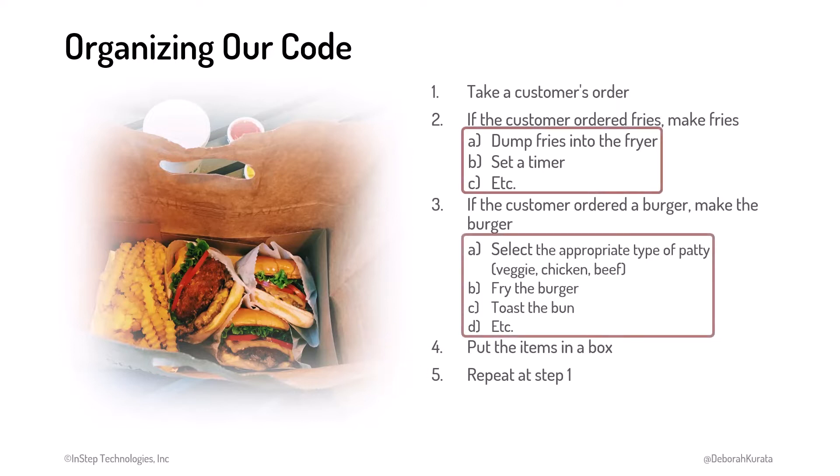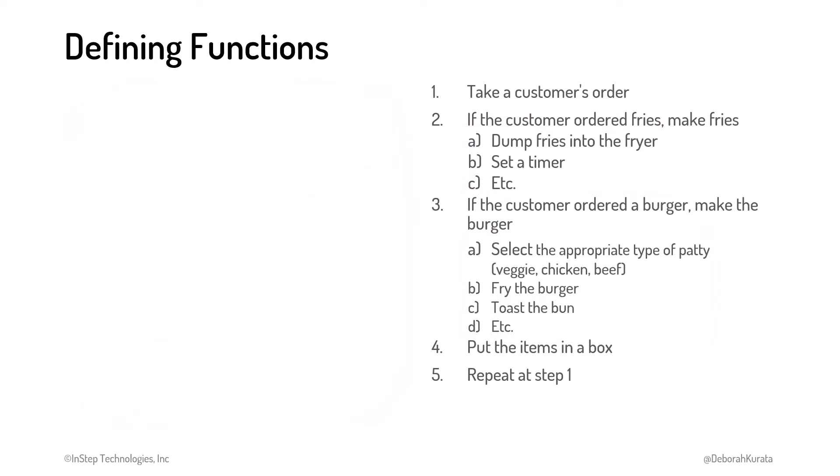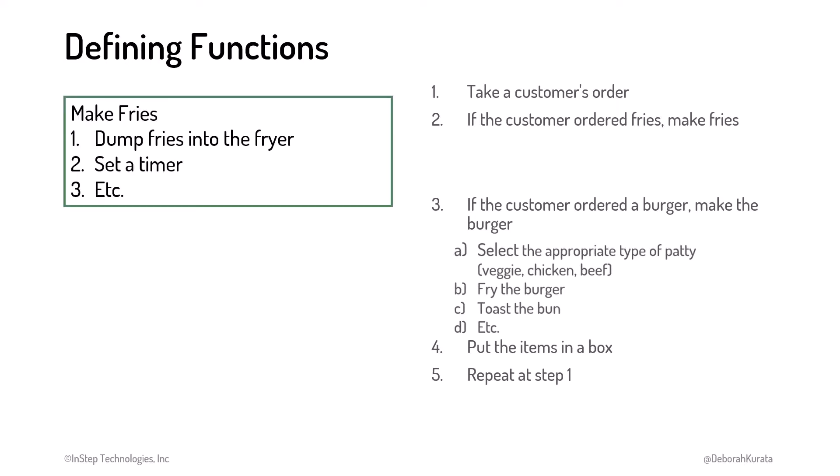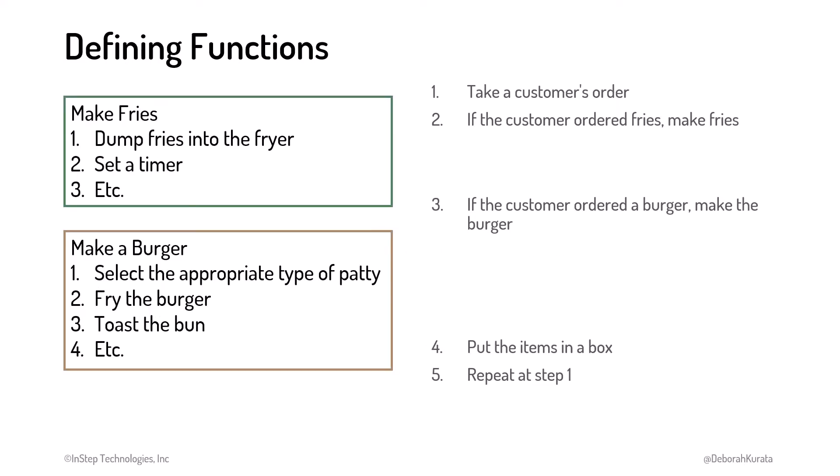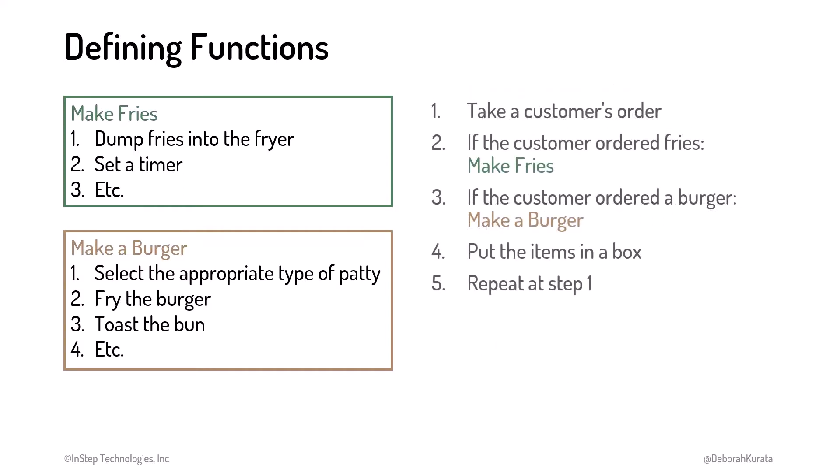Look at these sub-lists of tasks. To keep our main list of instructions more straightforward and easier to follow, we can move these sub-lists to separate sets of instructions. Here is our list for making fries and our list for making a burger. Then we reference those instructions in the main flow like this. So each separate list of instructions is clearly defined, and the main flow is easier to see without all of those sub-lists.